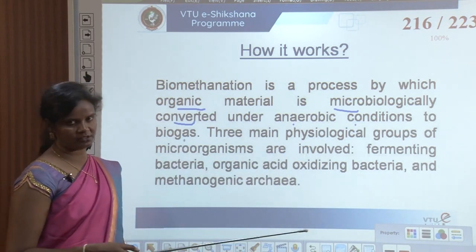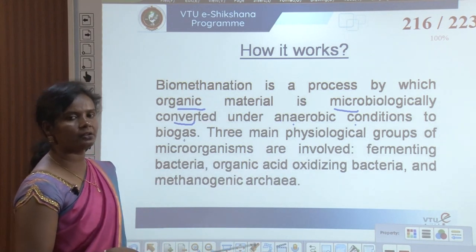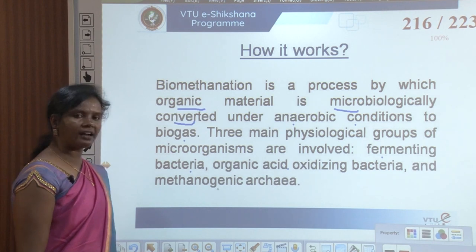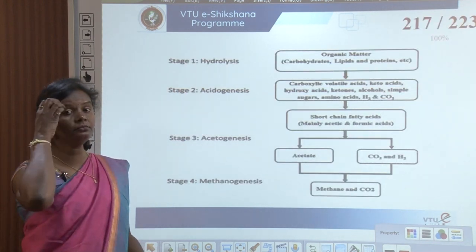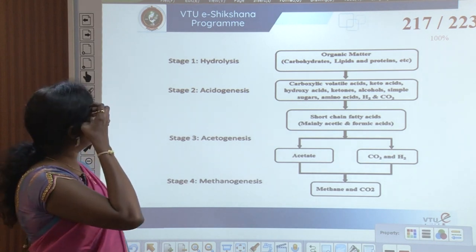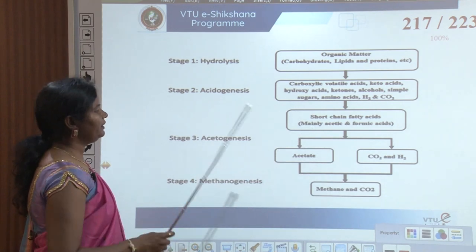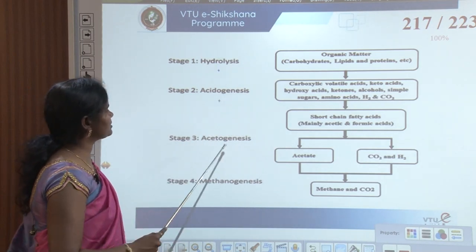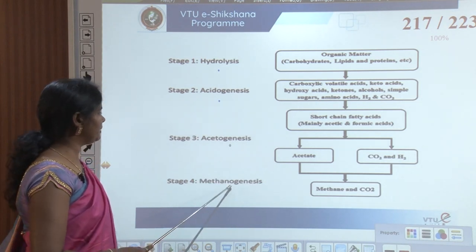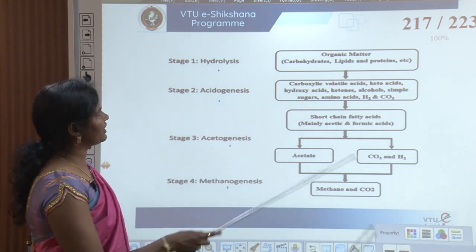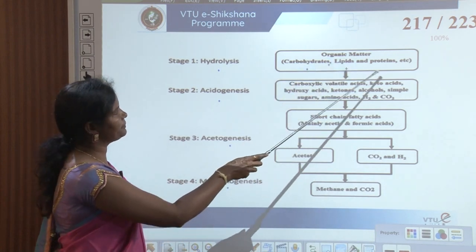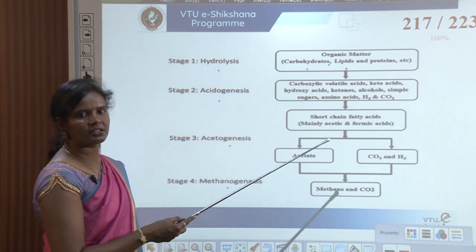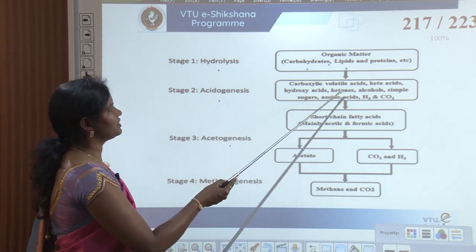Biogas is released due to that process. Three main groups of microorganisms involved are fermenting bacteria, organic acid oxidizing bacteria, and methanogenic archaea. The process stages are: hydrolysis (stage 1), acidogenesis (stage 2), acetogenesis (stage 3), and methanogenesis (stage 4). Organic matter containing carbohydrates, lipids, and proteins is mixed with water — that is hydrolysis.